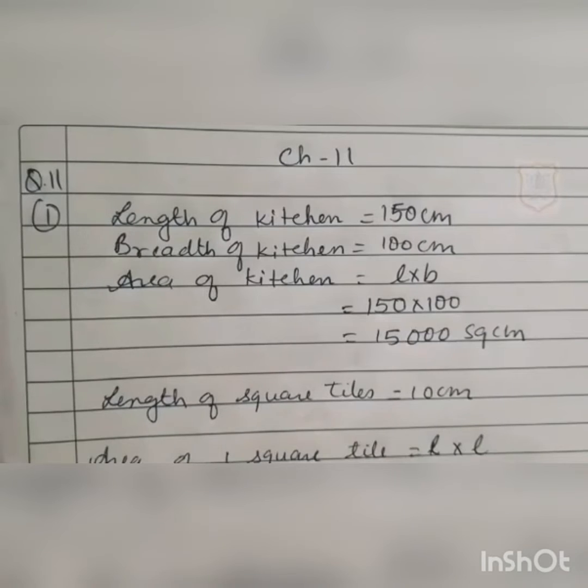What is the number of tiles required? It is the area of kitchen divided by area of one square tile. The area of the kitchen is 15,000 and the area of one tile is 100 square cm. Dividing 15,000 by 100, we get the answer 150. So, 150 tiles are needed.